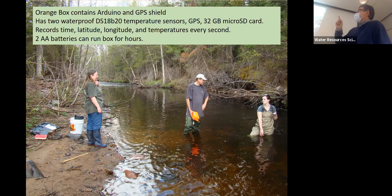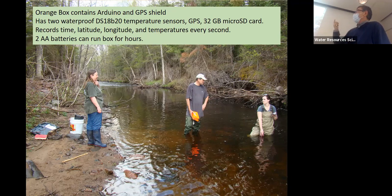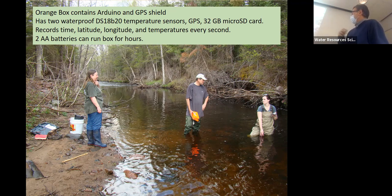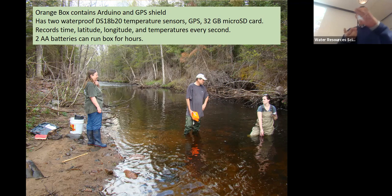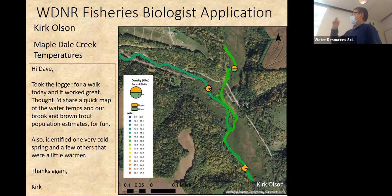We ended up calling it the 'orange box' — it contains an Arduino, a GPS shield, two waterproof sensors, and a 32 gigabyte micro SD card. Plugged in with two AA batteries, it records time, latitude, longitude, and temperature every second for several hours. With eight D-cells it would run for weeks. Here's Jean Bar, myself, and grad student Katherine Christensen measuring temperatures in a trout stream in northern Wisconsin.